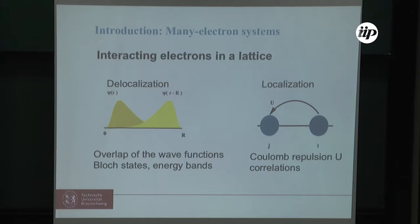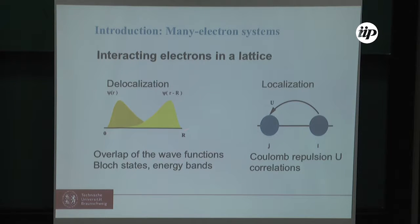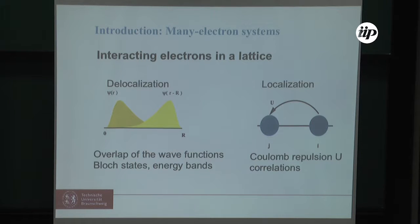We are treating interacting electrons in a lattice — systems with many degrees of freedom — and there are two competing tendencies. First, there is a tendency towards delocalization: the system can lower its kinetic energy by forming coherent Bloch states, resulting in energy bands. On the other hand, we have a tendency towards localization due to the Coulomb repulsion electrons feel when at the same lattice site. It is the competition between these tendencies which determines the properties of a solid.